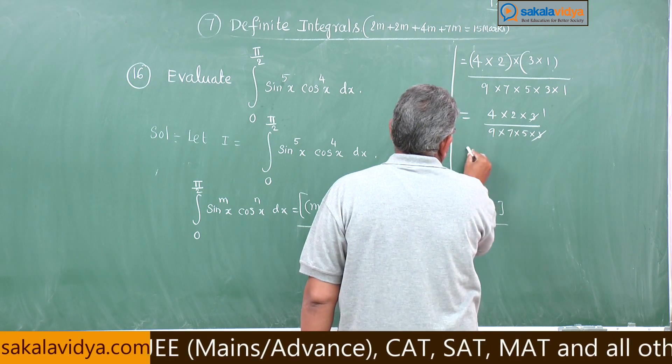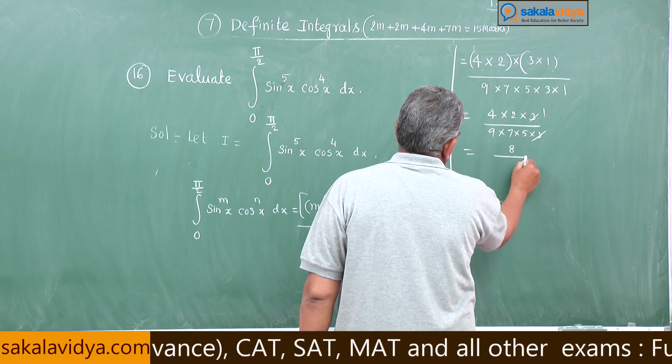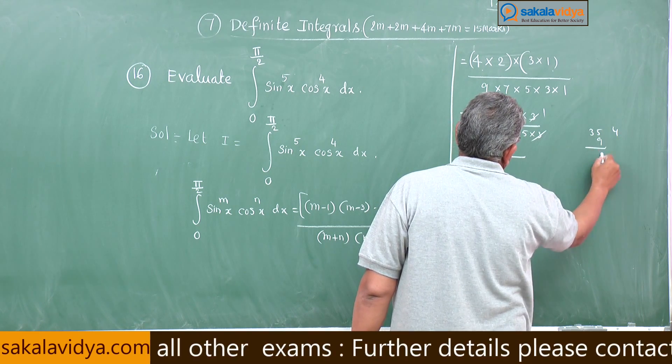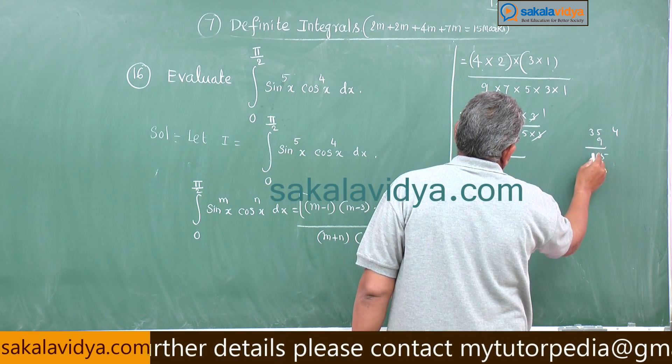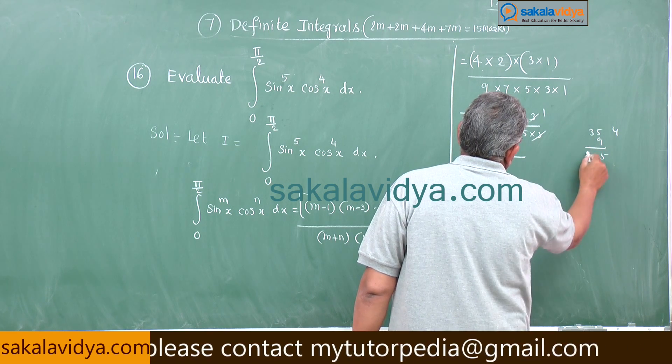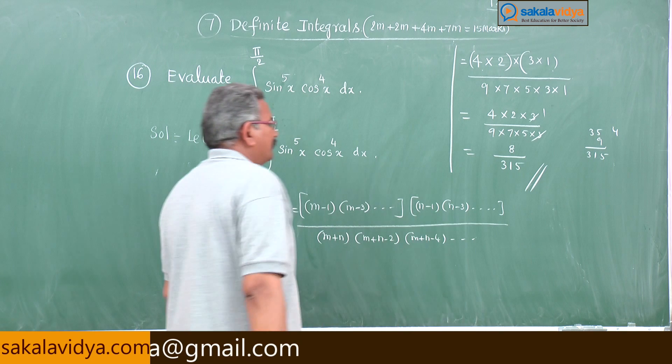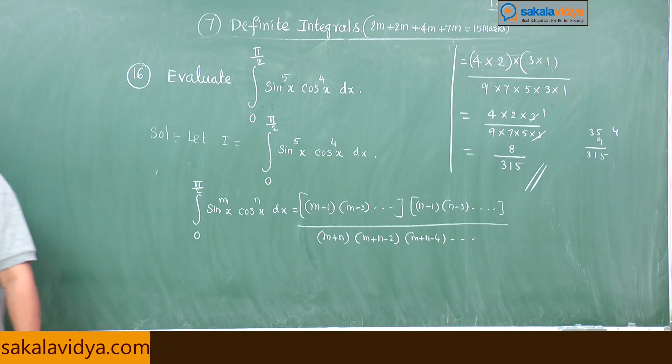This equals 4 into 2 into 3 by 9 into 7 into 5 into 3. 3 gets cancelled. So 8 divided by, 8 divided by 35 into 9, 45, 27 plus 4, 31, 315. This is the answer 8 by 315.